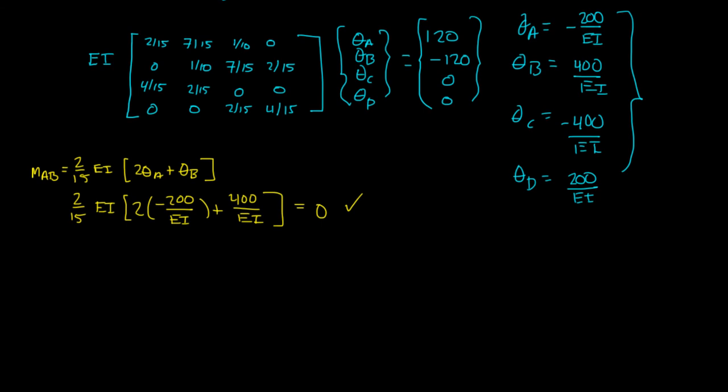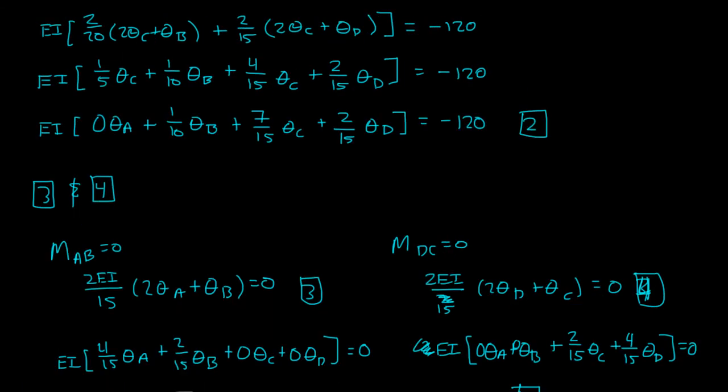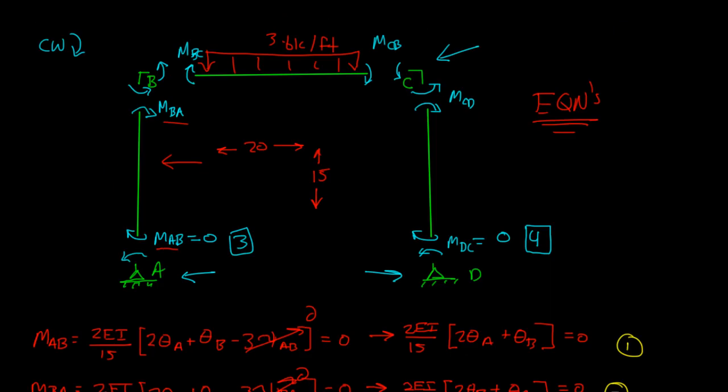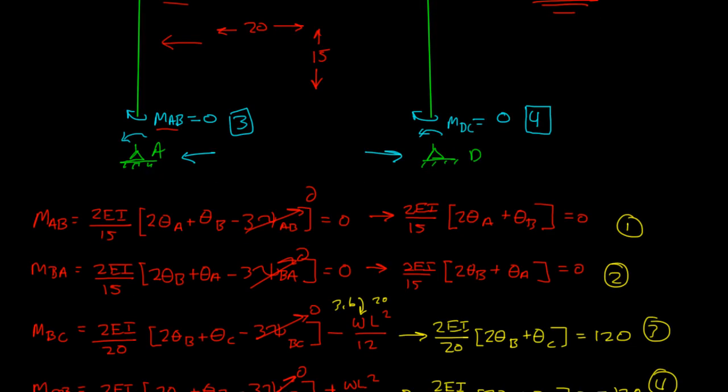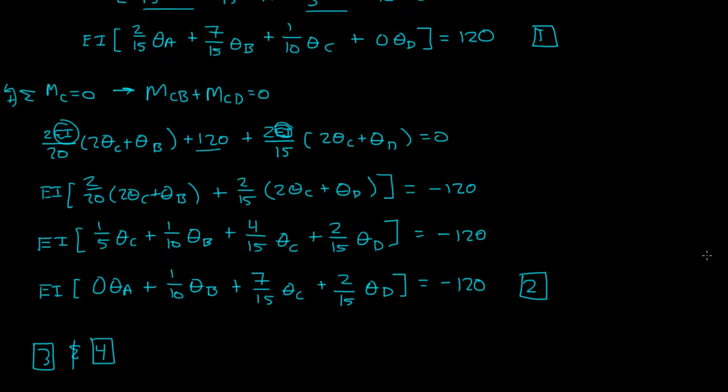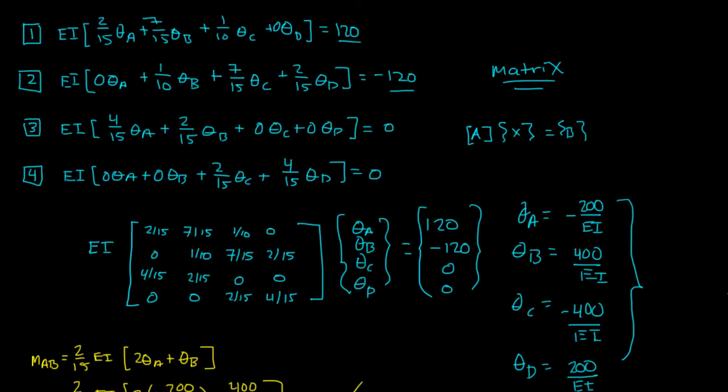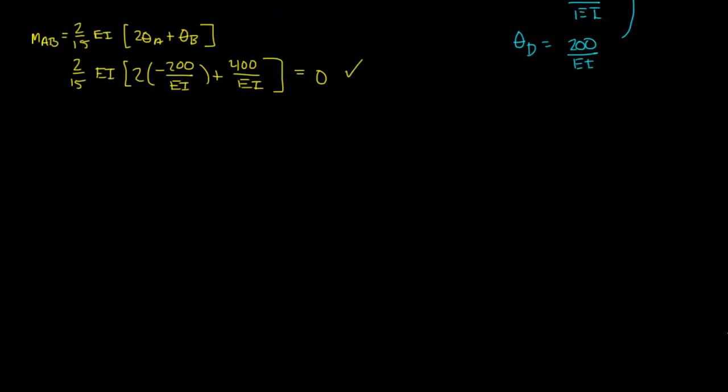And does this make sense? Well, let's check. MAB was a moment about the pin. And the pin doesn't support a moment. So that means MAB is equal to 0. And our equation, or when we figured out what theta A and B are, MAB, when we plugged in theta A and theta B was 0. So that means we're right there.